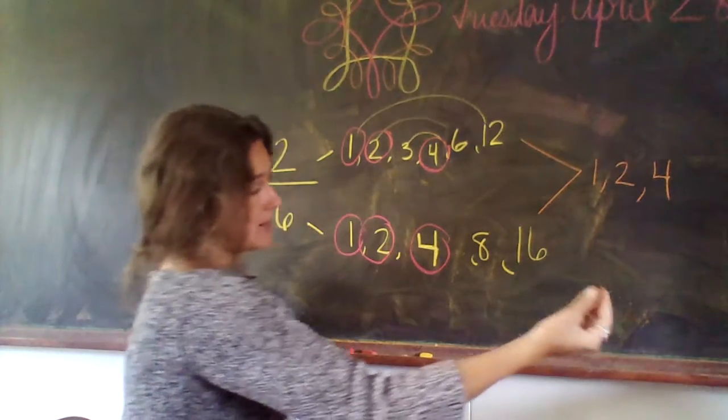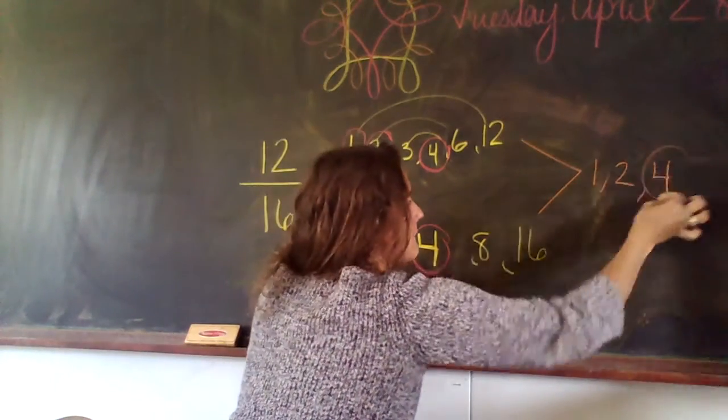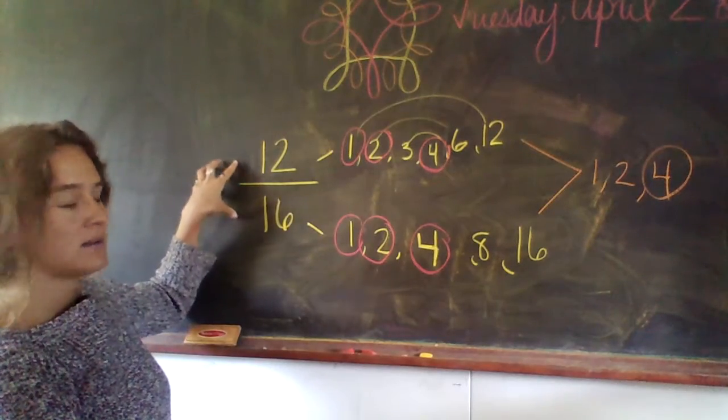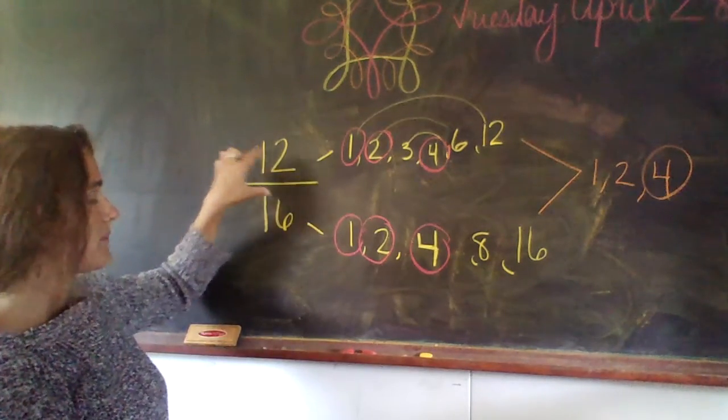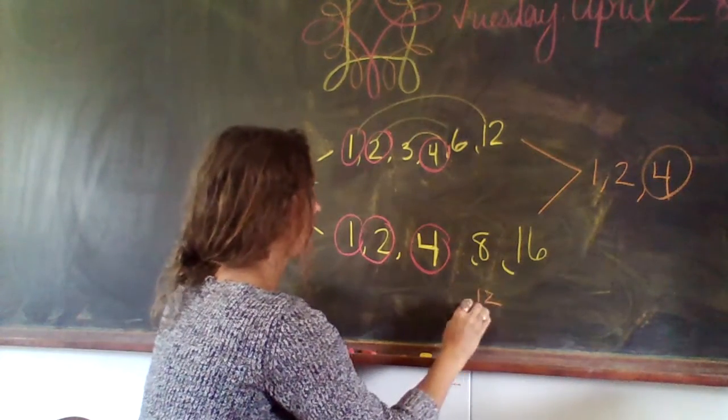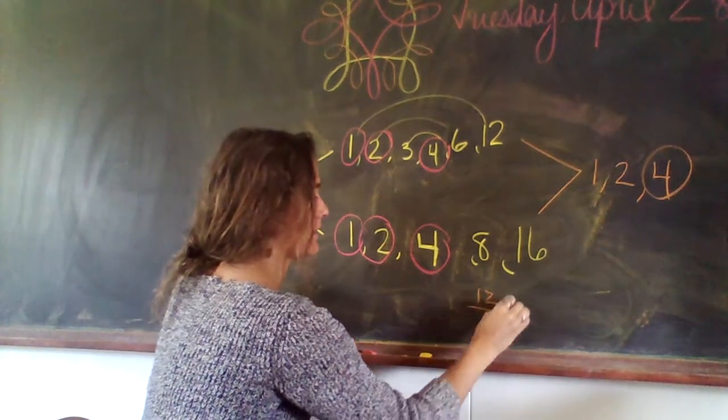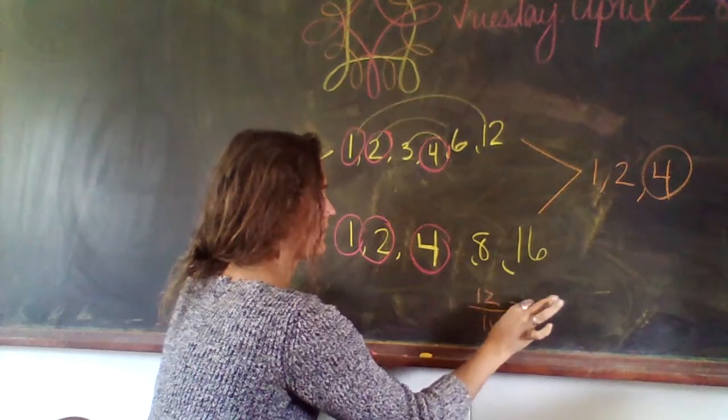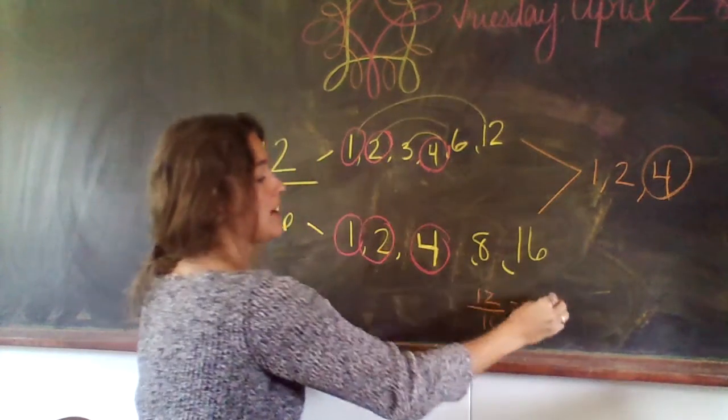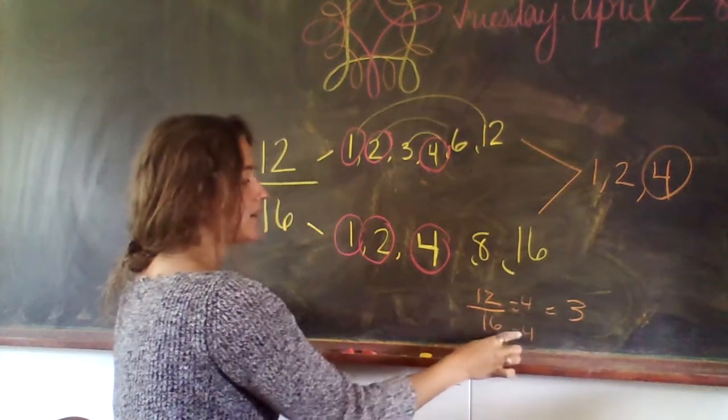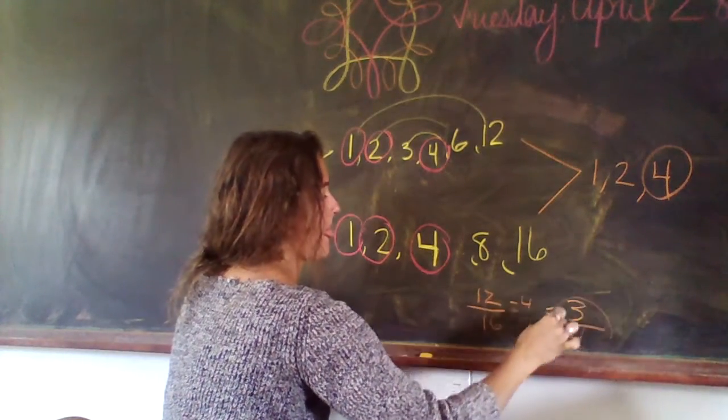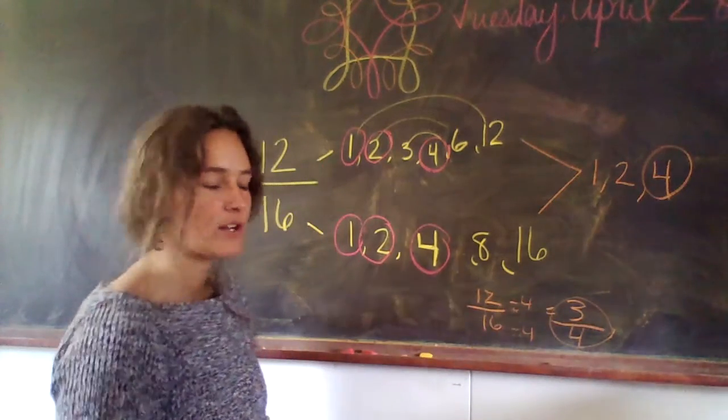1, 2, and 4 are the common factors. Then the greatest common factor, might as well just get in the habit of that, is 4. So if I'm going to simplify this fraction, I'm going to divide it by 4 to get the simplest form. 12 divided by 4 is 3. 16 divided by 4 is 4.